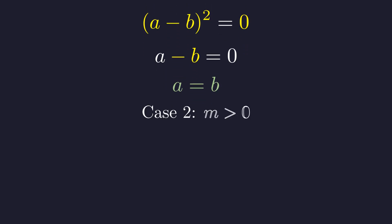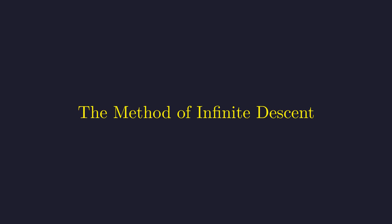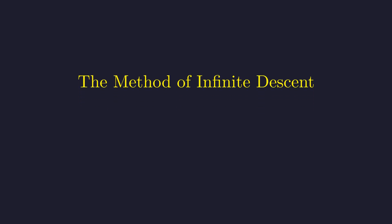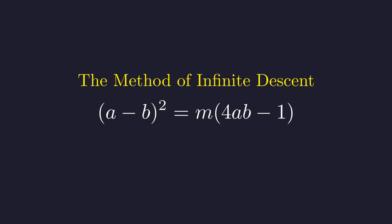We will now prove by contradiction that M cannot be a positive integer. The technique we will employ is known as the method of infinite descent, famously used by Pierre de Fermat. It works by assuming a positive integer solution exists and using it to construct a strictly smaller positive integer solution. This process would generate an impossible, infinite chain of decreasing positive integers. We begin with our equation, under the assumption that M is a positive integer.